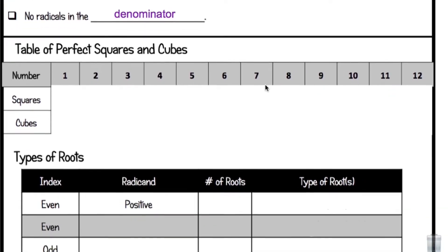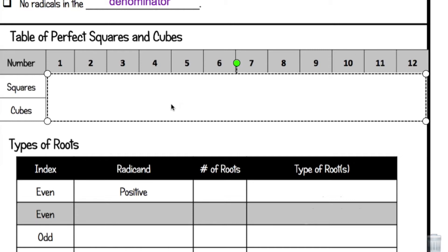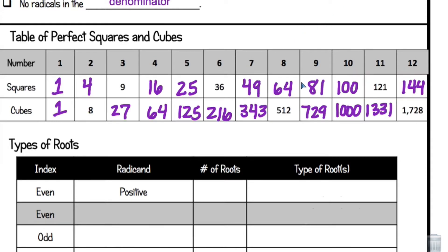Thinking about how we want to simplify radicals, there are some strategies. We want to use the table of perfect squares and cubes to give us a strategy that will make it a little bit easier. Here is the table of perfect squares and cubes. One squared is one, one cubed is one. Two squared is four, two cubed is eight. You can pause the video to fill in your table with our squared and cubed numbers.